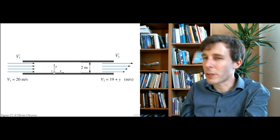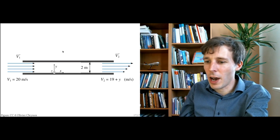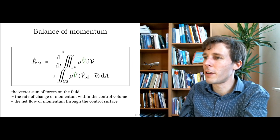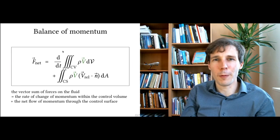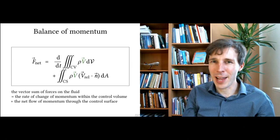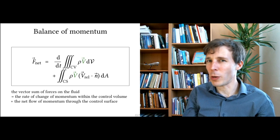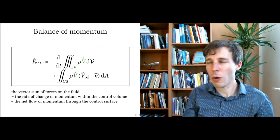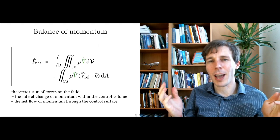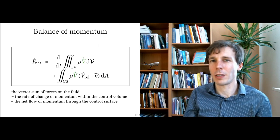This is how you manipulate the net force equation — the balance of momentum equation — in a flow where the inlet and the outlet have different velocity distributions.